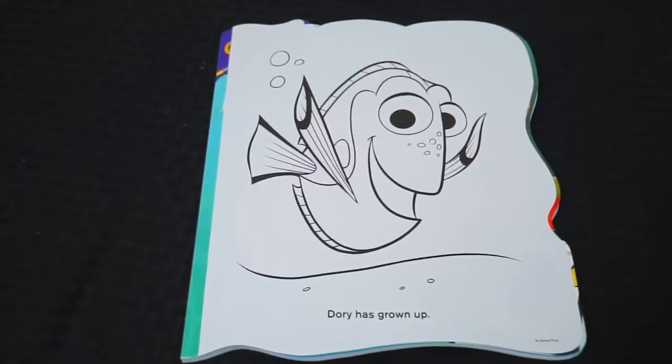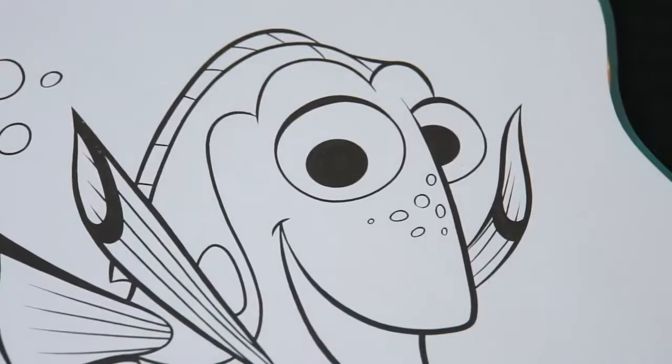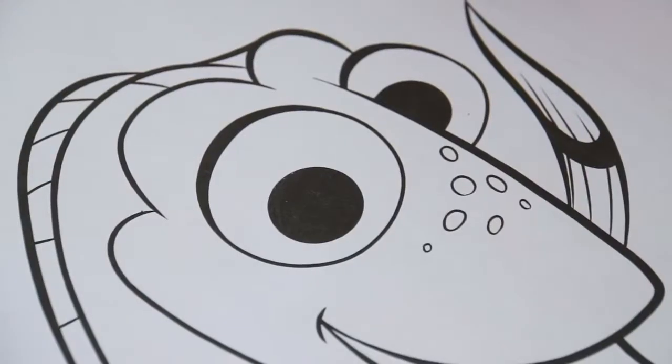Okay, so I picked out which picture I'm going to color. I'm going to do this one of Dory when she's all grown up. Let's start on her face first. Her eyes are pink.